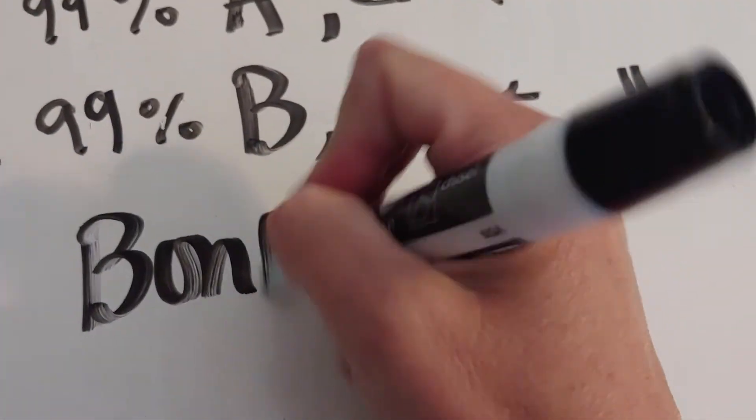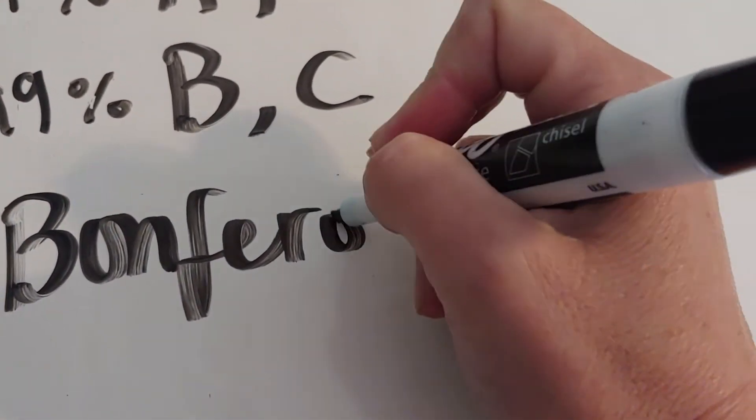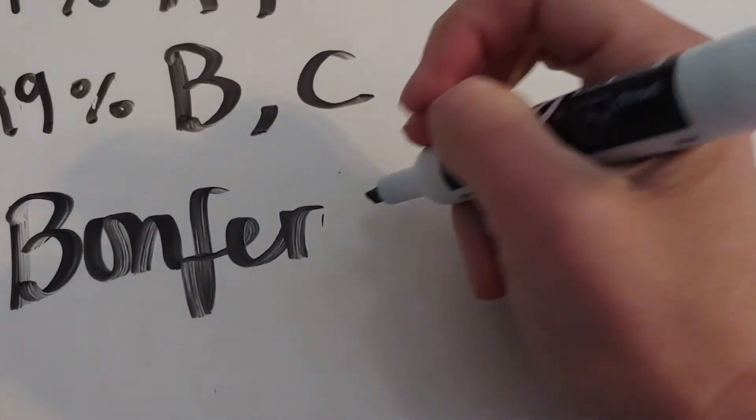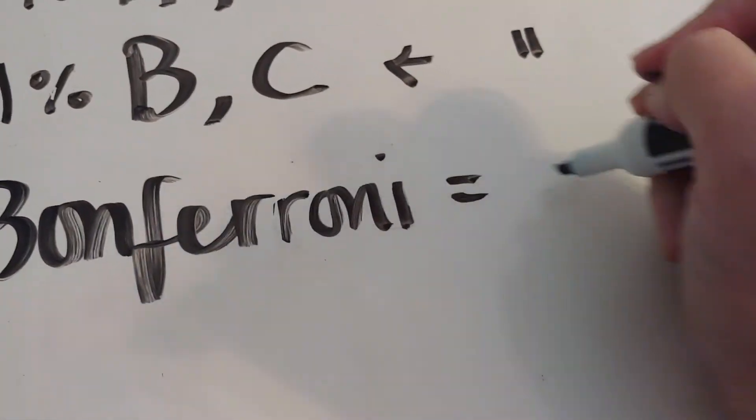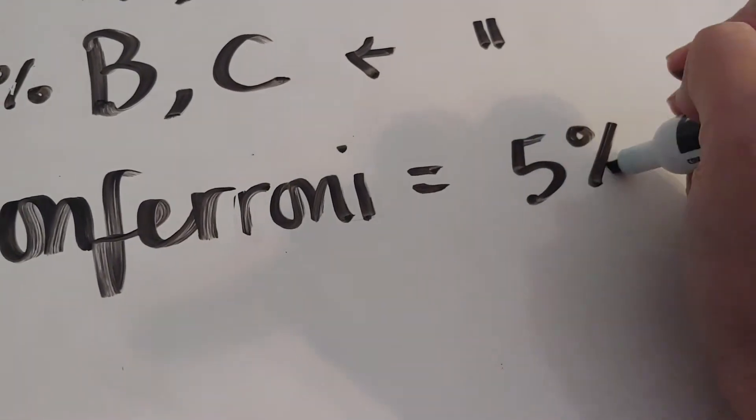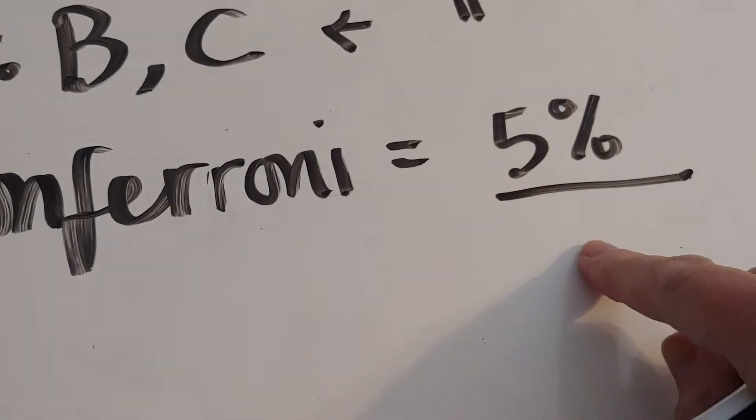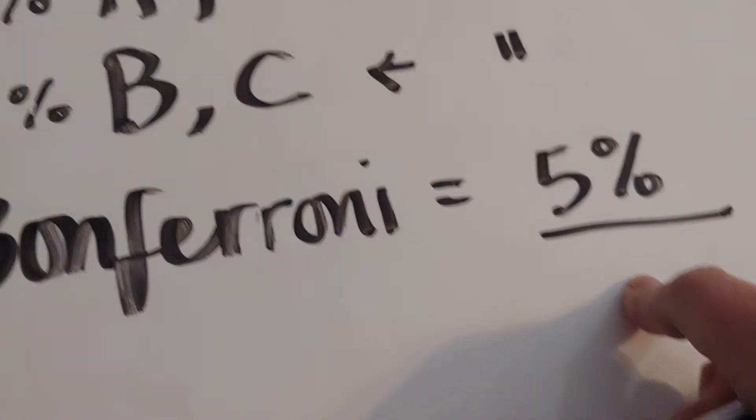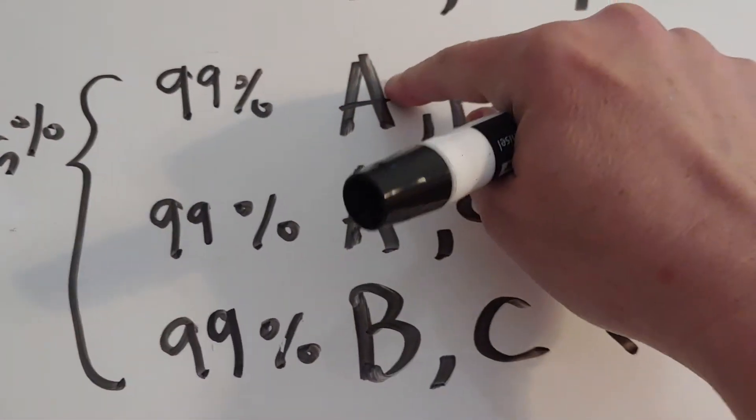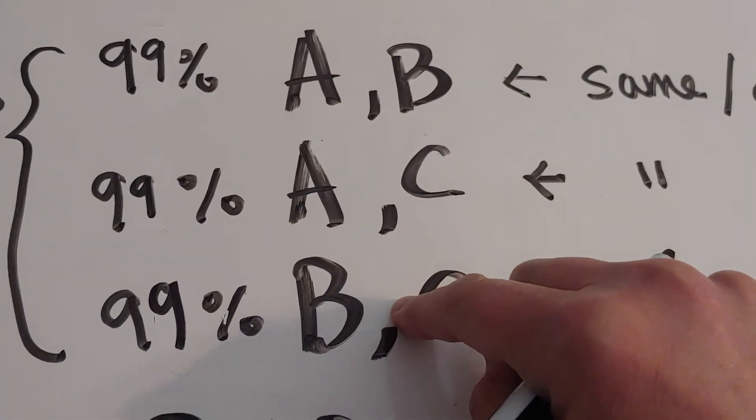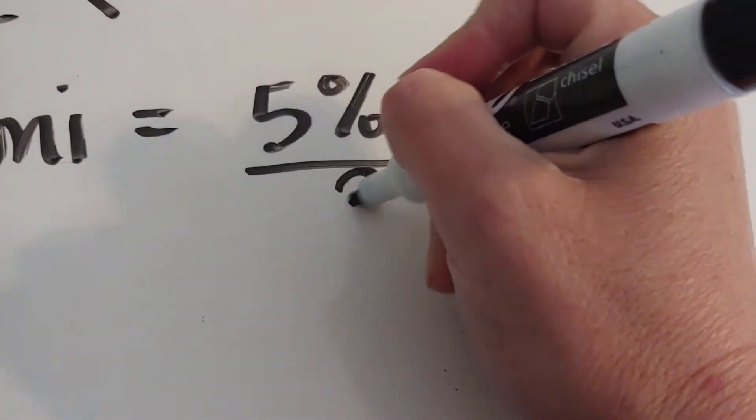The Bonferroni says that we're going to take our 5% error and divide it by the number of comparisons we're going to make. As you can see, we're going to do one, two, three comparisons. So I'm going to divide 5% by three.